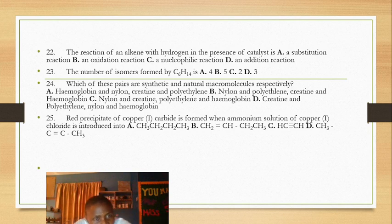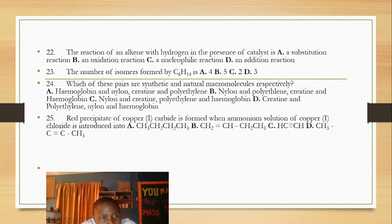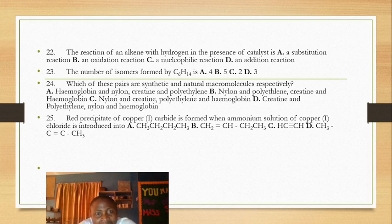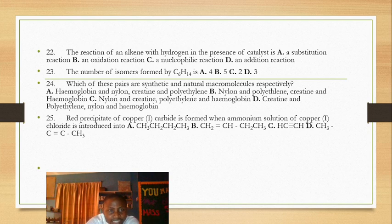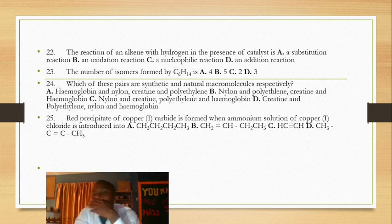Nylon is synthetic; creatine is synthetic; hemoglobin is natural. The question asks for synthetic pair first and natural pair second. So the answer is B: nylon and polyethylene as synthetic, creatine and hemoglobin as natural.